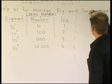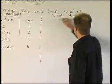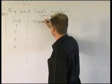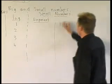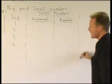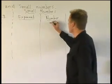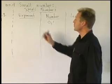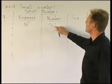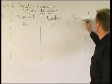Now, for small numbers — we have the same columns: Exponent, Number, and Log. Let's take the small number 0.1. You should know that's 10 to the minus 1 — you've done algebra already. It's got one decimal place, so you put the log as minus 1.